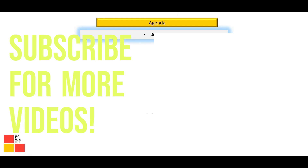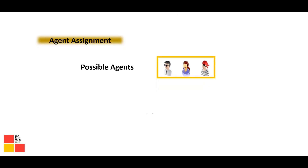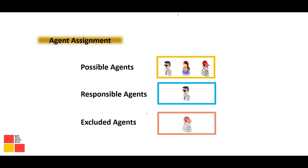In this session we are going to discuss about the agent: what is an agent, and what are the different types of agents. An agent is nothing but the person who is going to take the action on a work item. This can be a single person or a list of persons. Tasks are divided into two parts: background and dialogue. For dialogue tasks, we require agents — those who can take action on the work item.